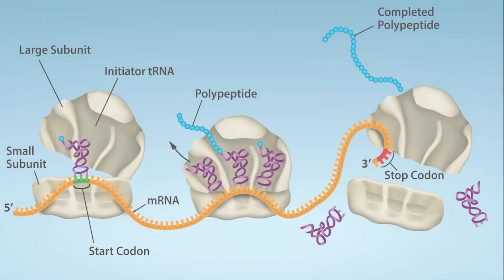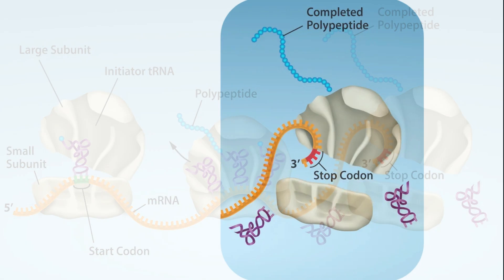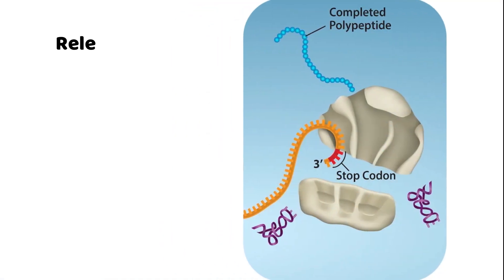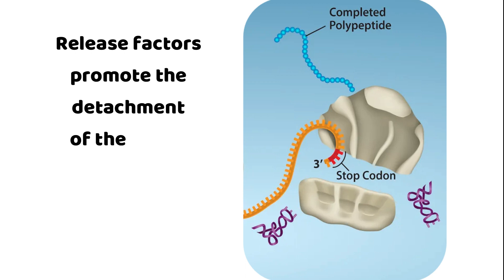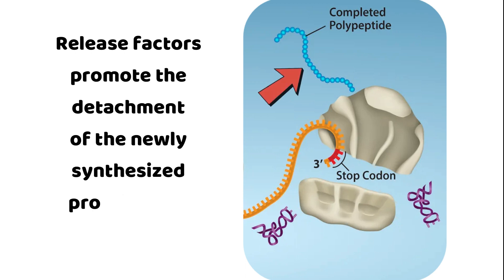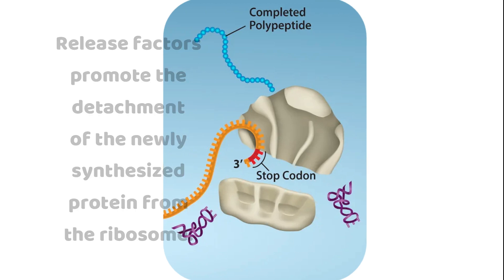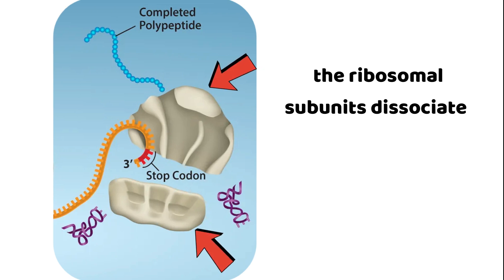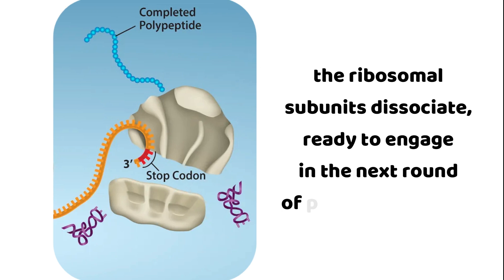As the ribosome reaches the stop codon on the mRNA, the protein synthesis process concludes. Release factors promote the detachment of the newly synthesized protein from the ribosome, and the ribosomal subunits dissociate, ready to engage in the next round of protein synthesis.